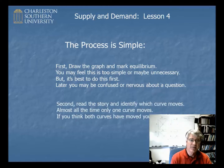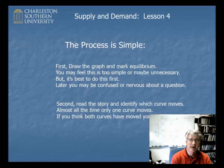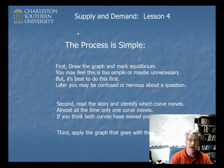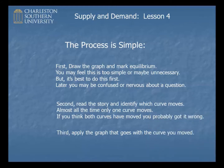Then you read over the story and identify which curves move. Almost all the time only one curve will move. Often students will think two curves will move or it'll move in two directions, but 99.9% of the time one curve moves. If you think both curves have moved, you've probably got it wrong. Third, you just apply the graph that goes with the curve you've moved. It's just that simple.